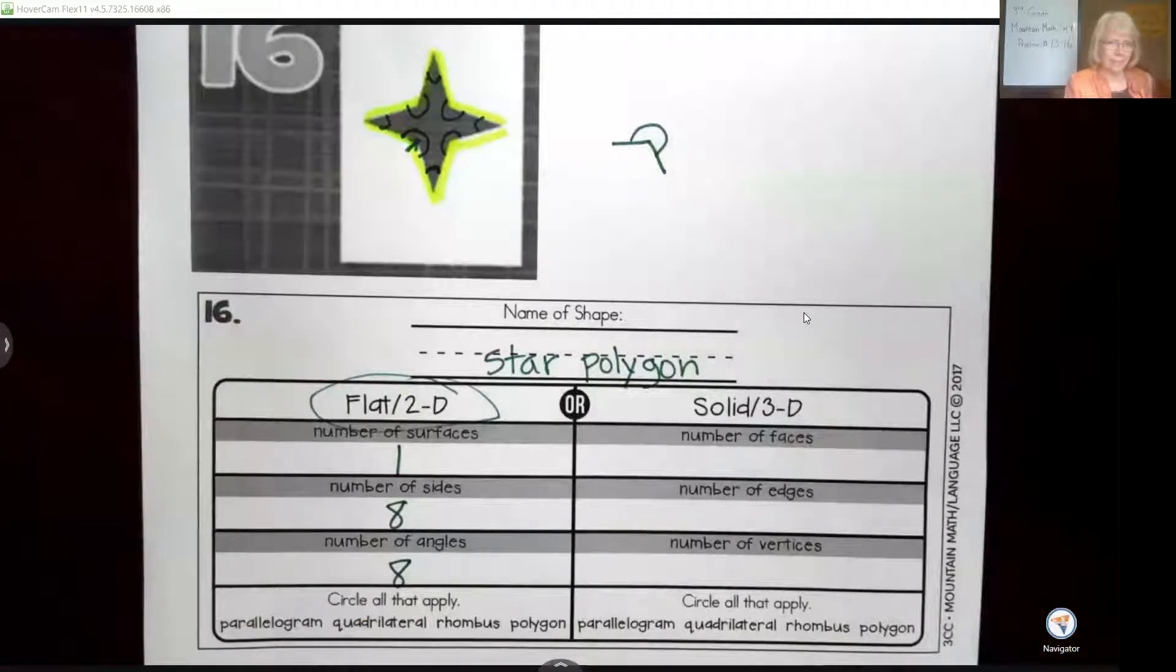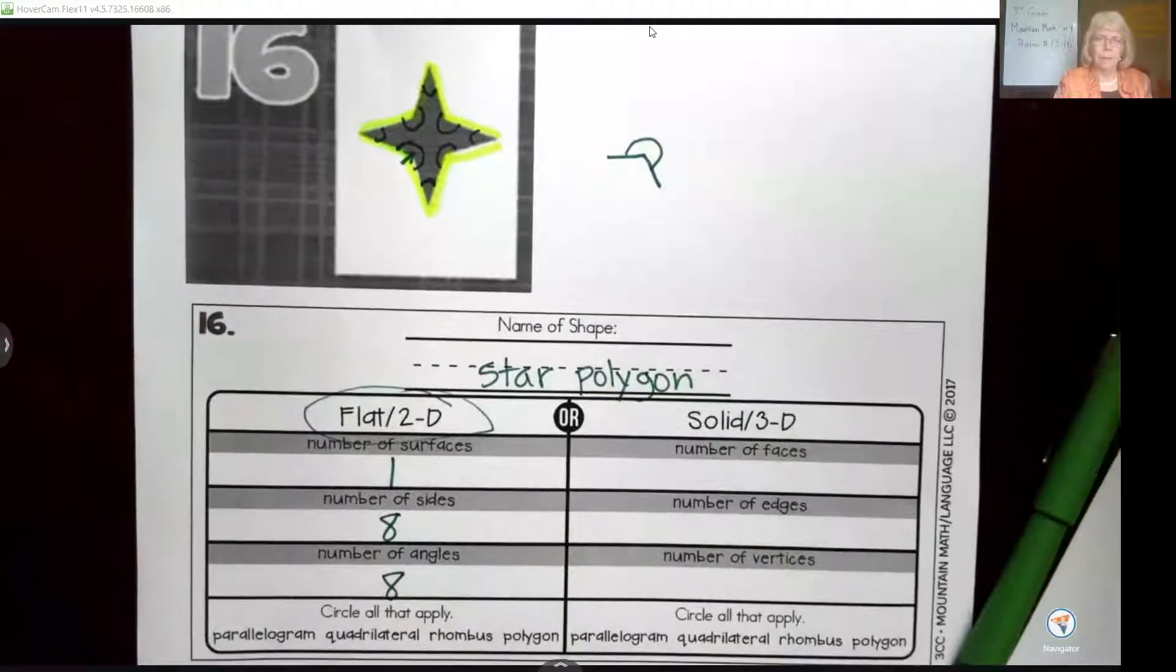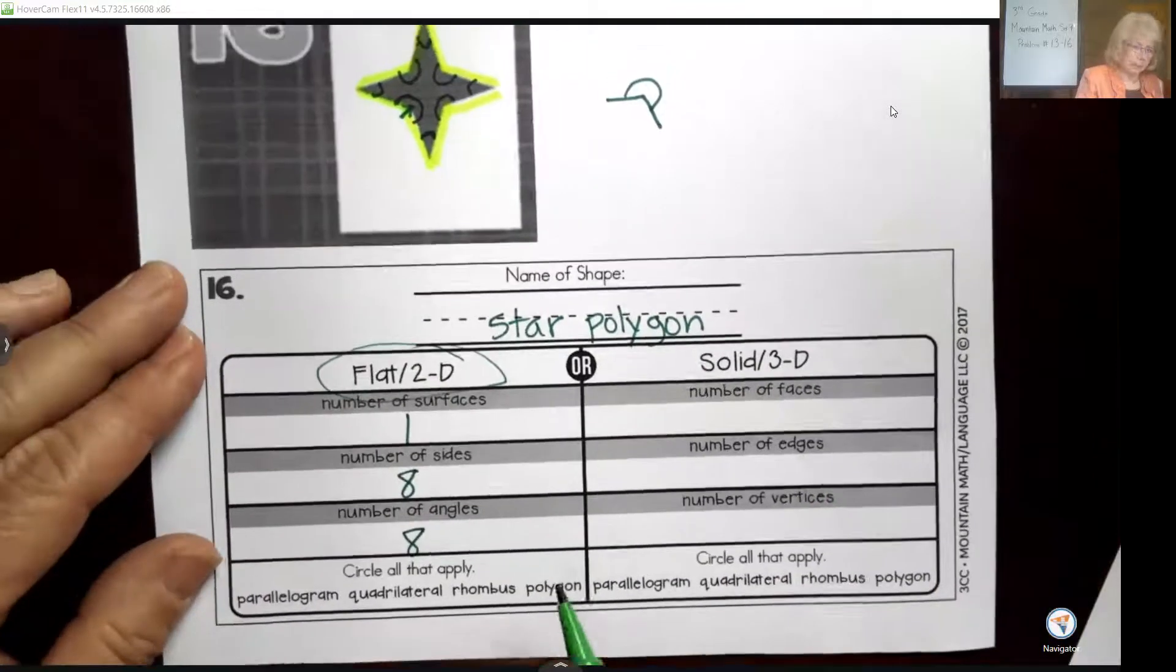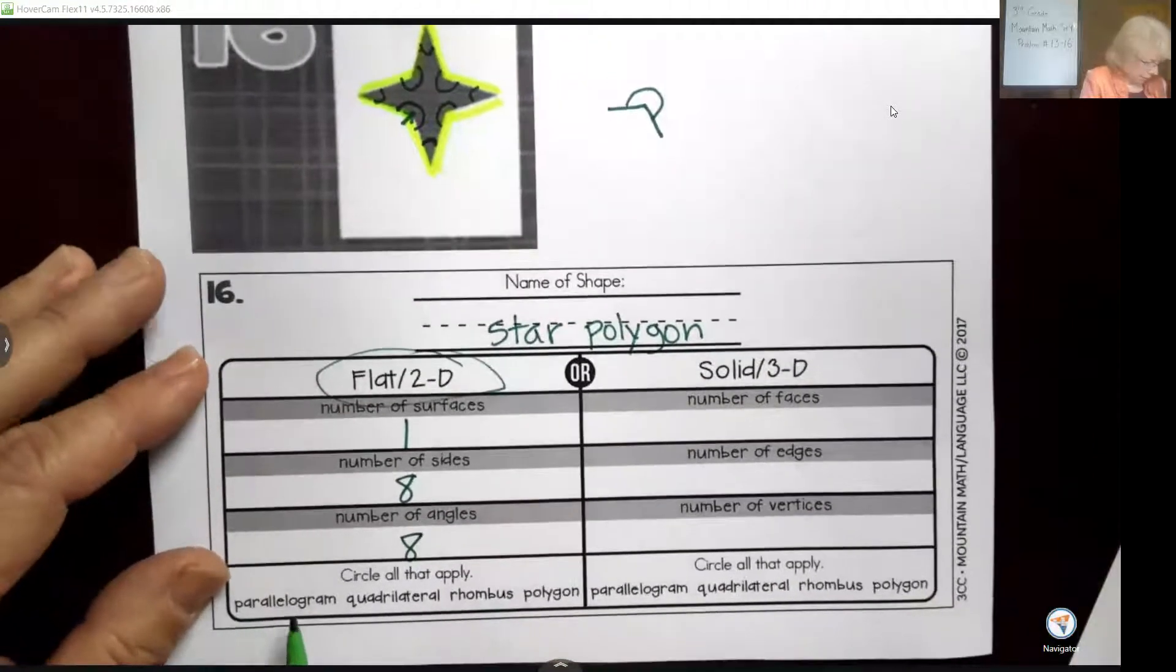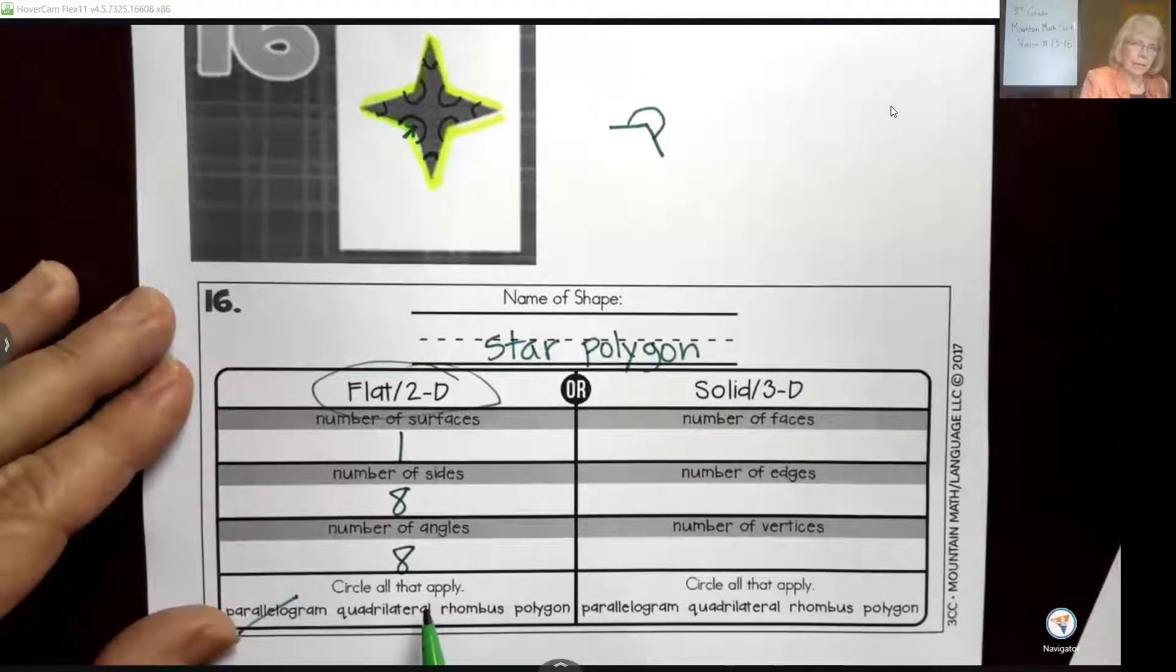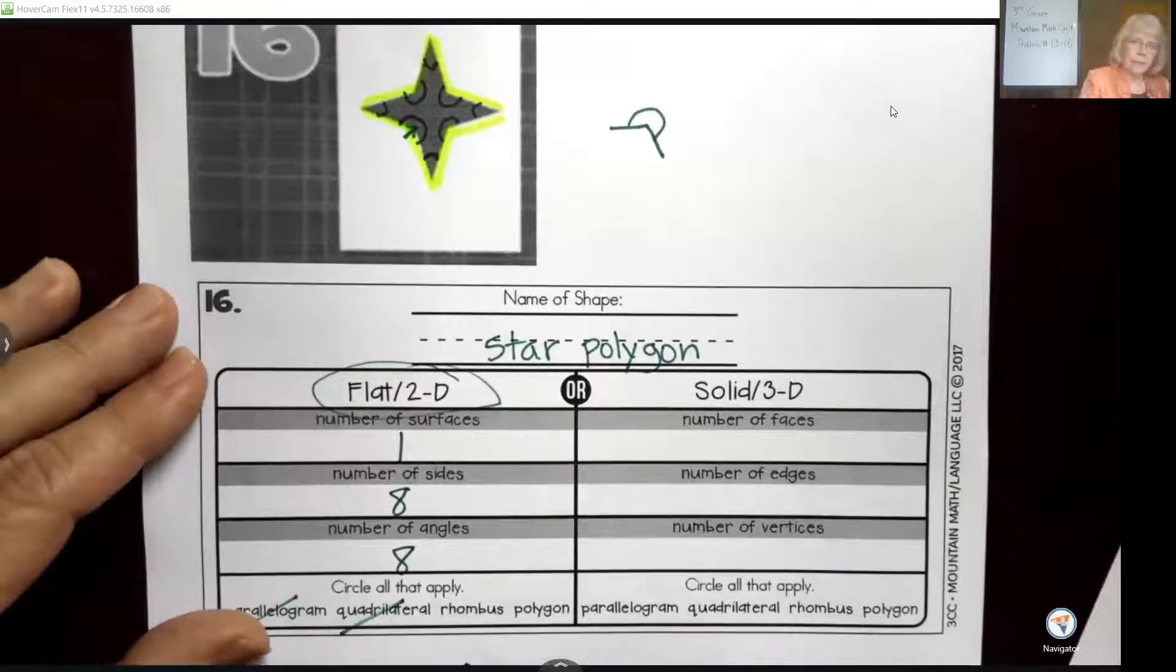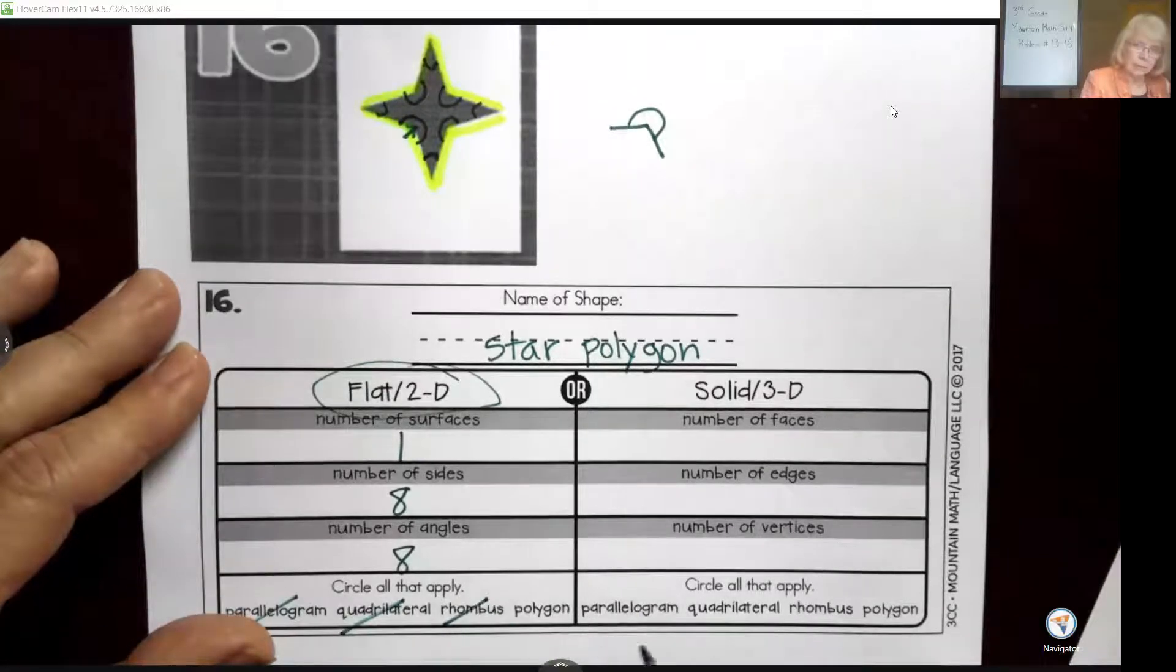In third grade, you'll learn more about that later. That is it for our problem set. Oh, I got one more thing to do down here, almost forgot. It's asking: is it a parallelogram? Parallelogram means are there two parallel sides on my flat shape—nope. Quadrilateral means does it have four sides as a polygon—nope, it has eight sides. Rhombus, well, we'll come back to that another day. And is it a polygon? Yes, so that's the only one we get to circle today.